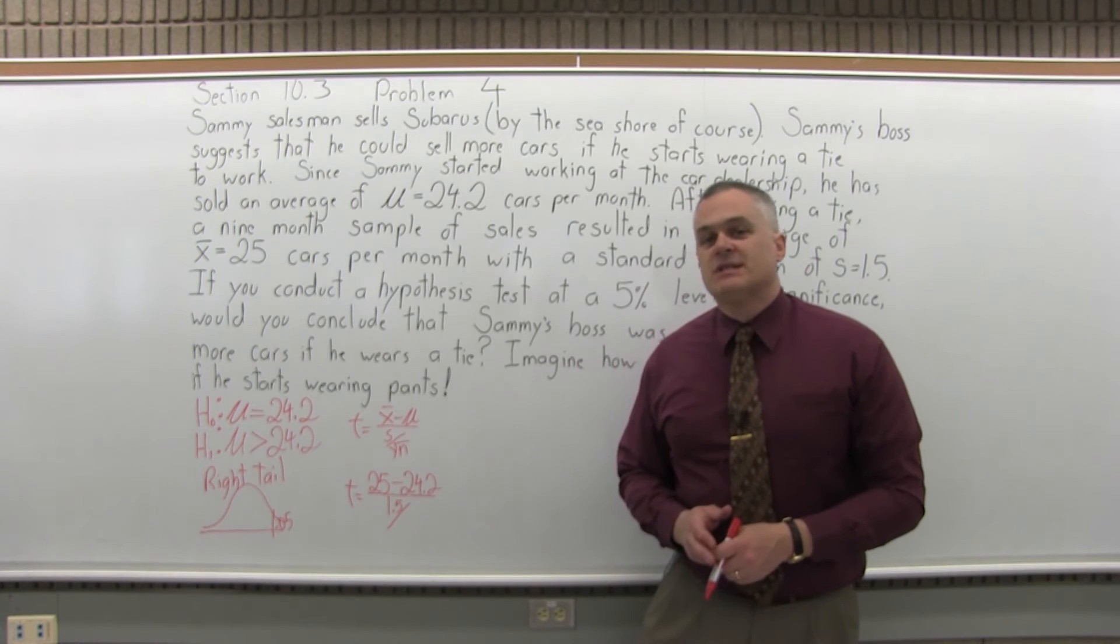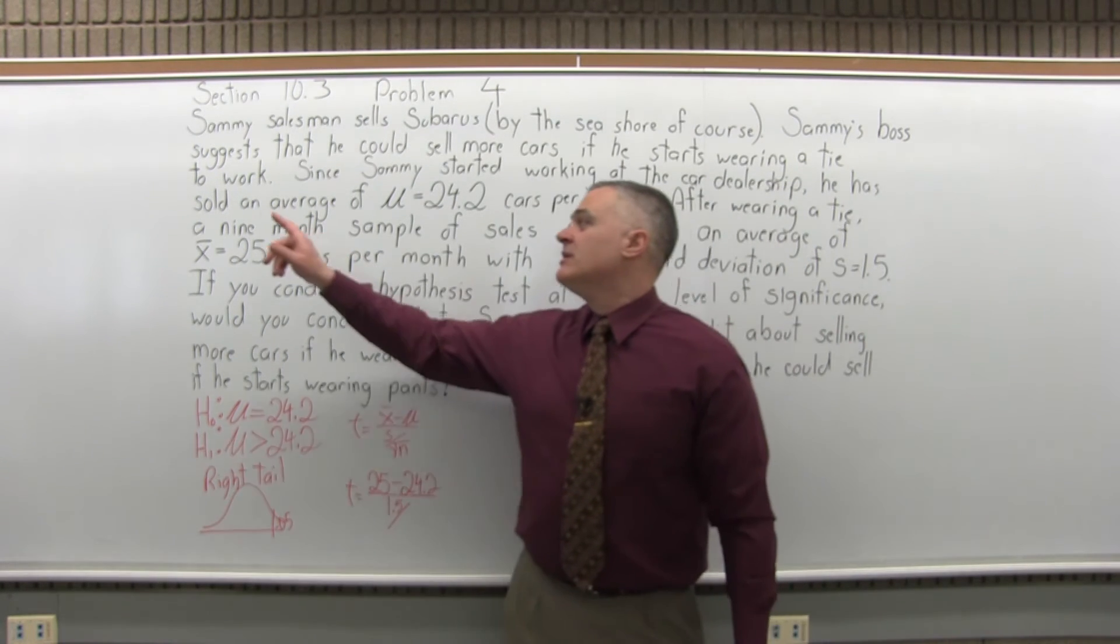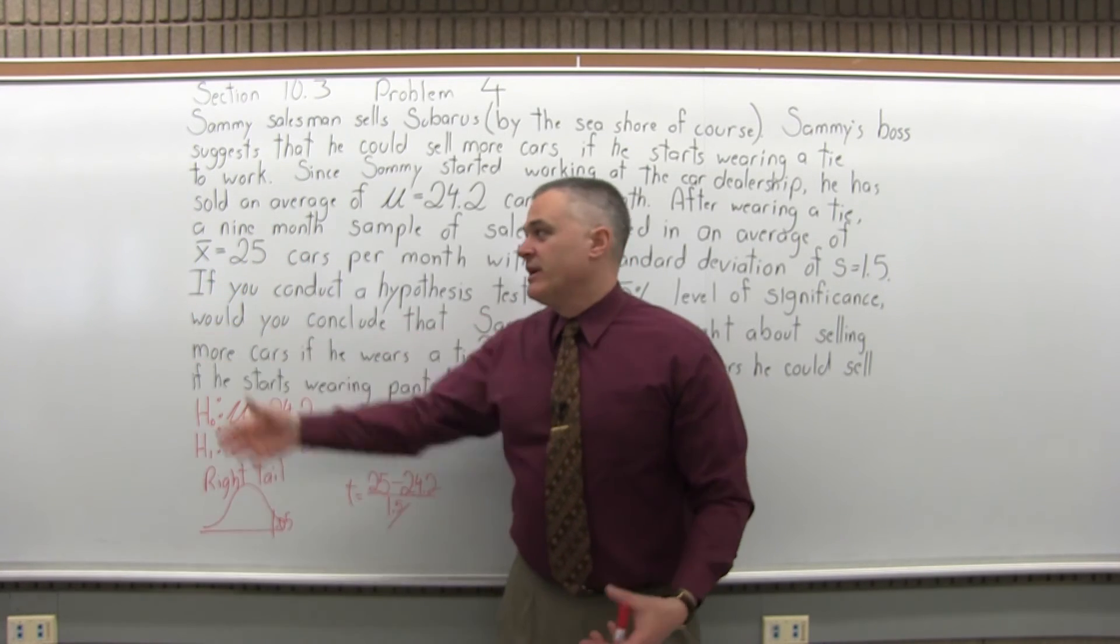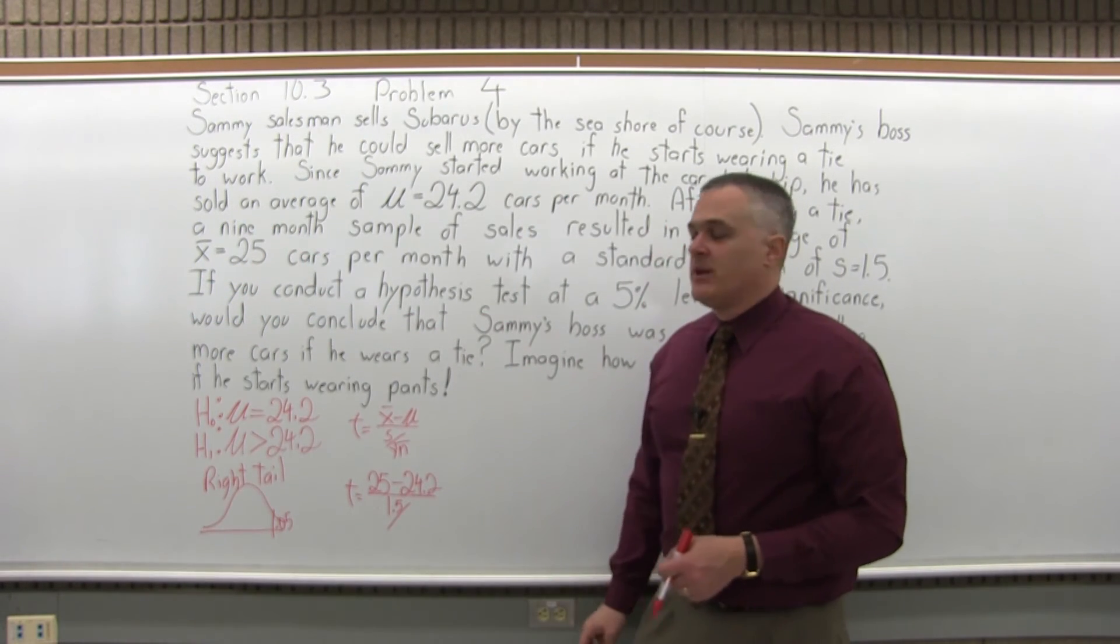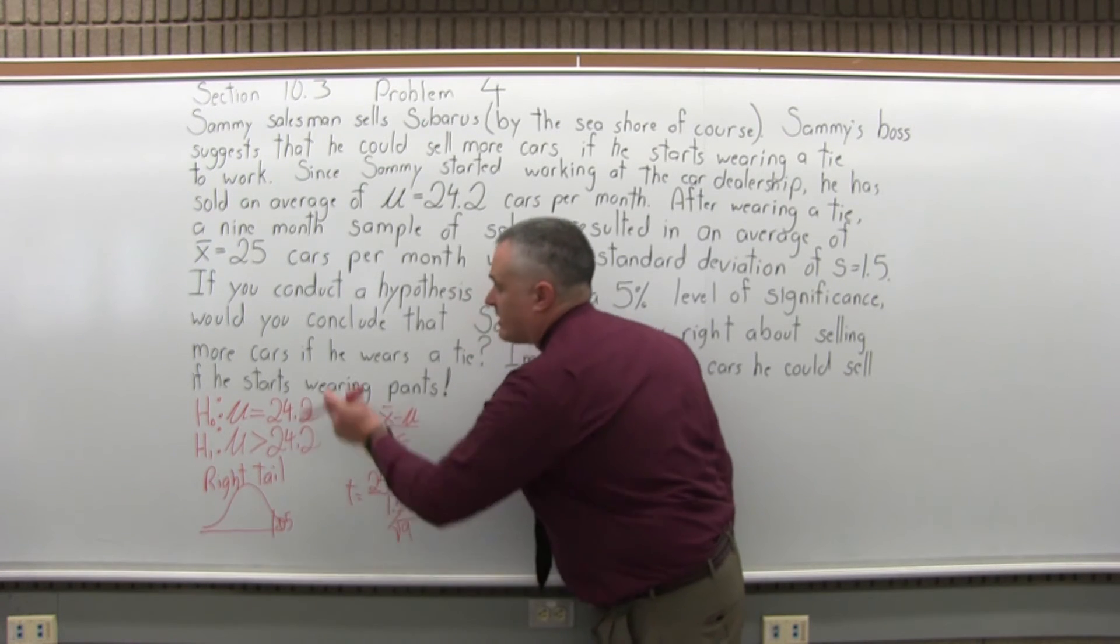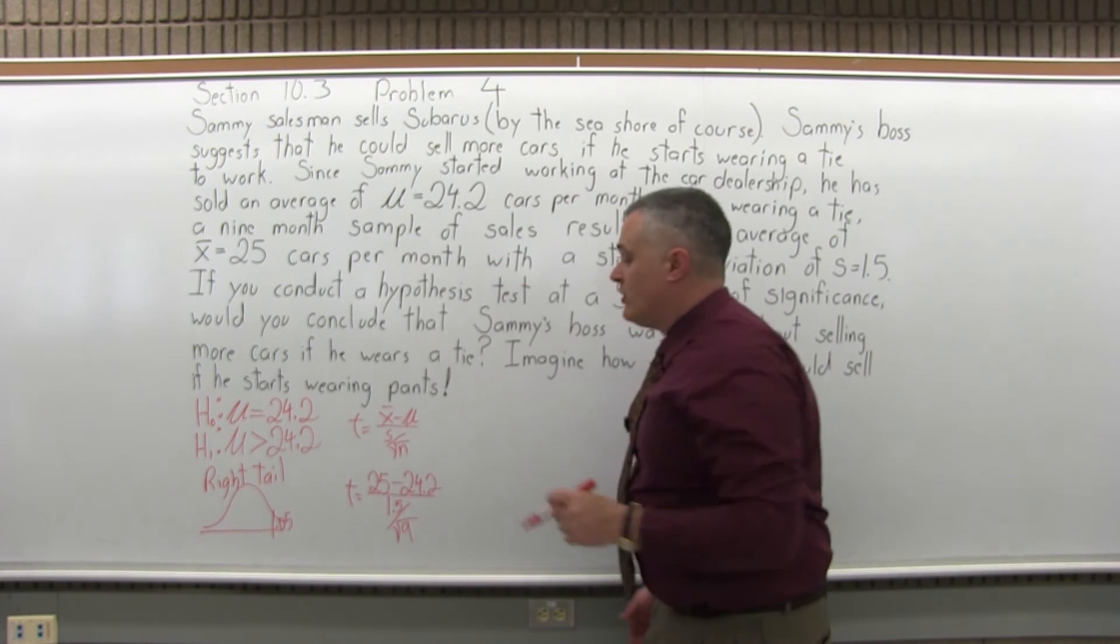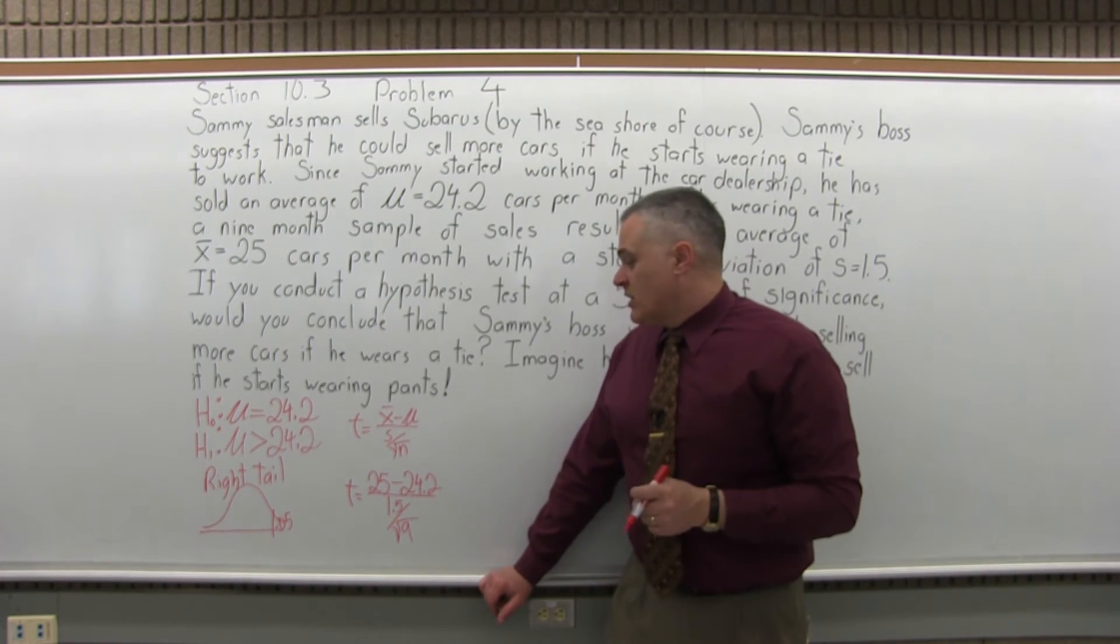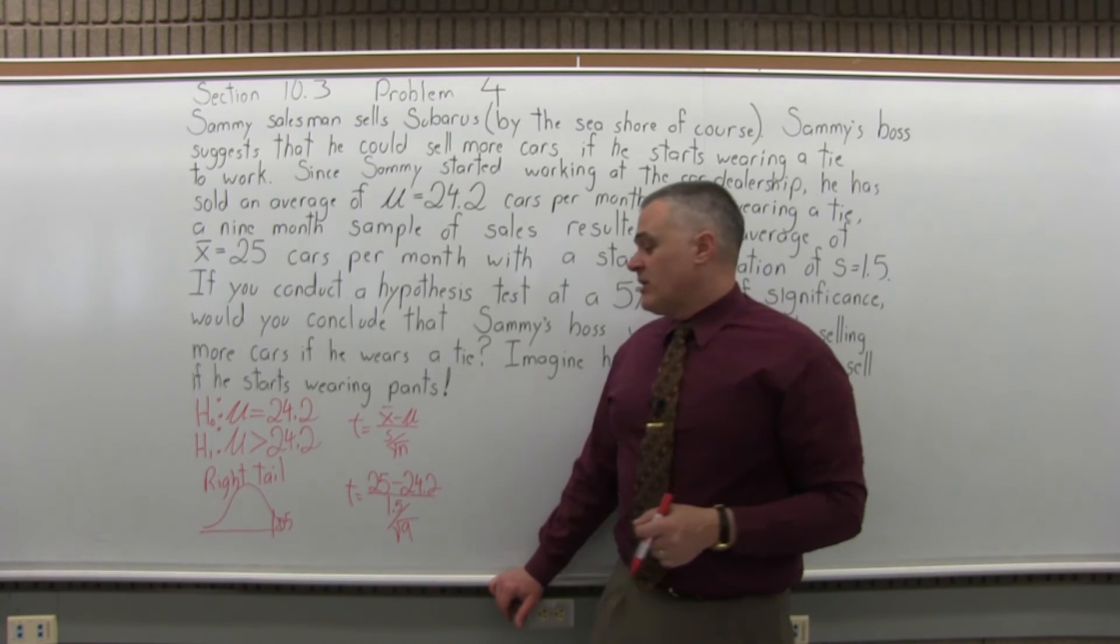N is the size of the sample. So our sample has a size of 9. There was a 9-month period where we saw how many cars per month Sammy could sell. So square root of N becomes square root of 9 because our sample size is 9. Don't forget the square root. That's a fairly common mistake. So now that I've filled in the formula, I can start the computation.